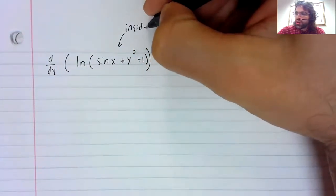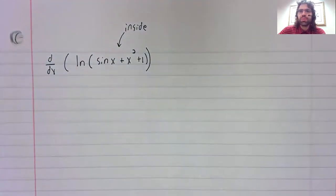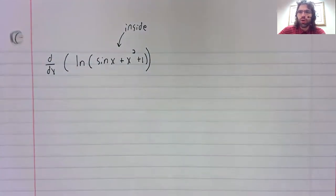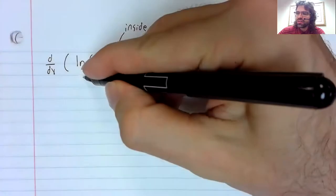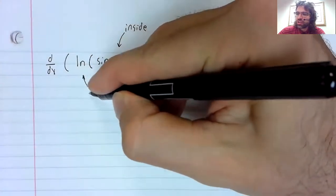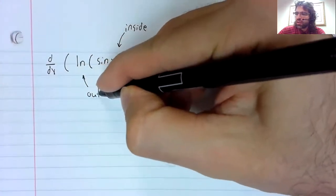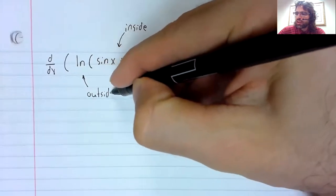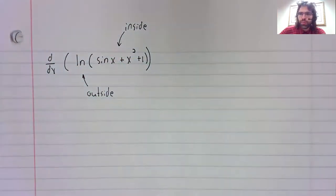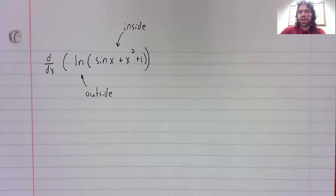Whatever function you have inside the parentheses is always the inside function. The logarithm is always the outside function.